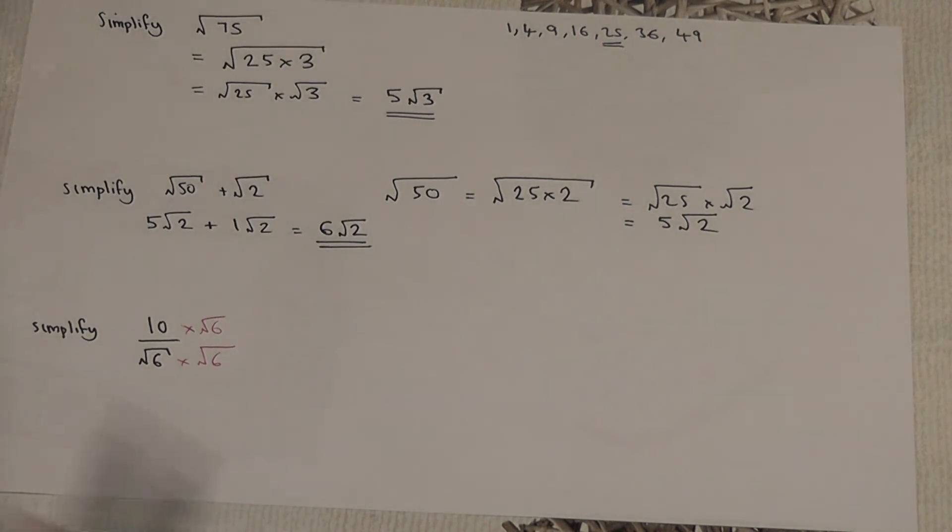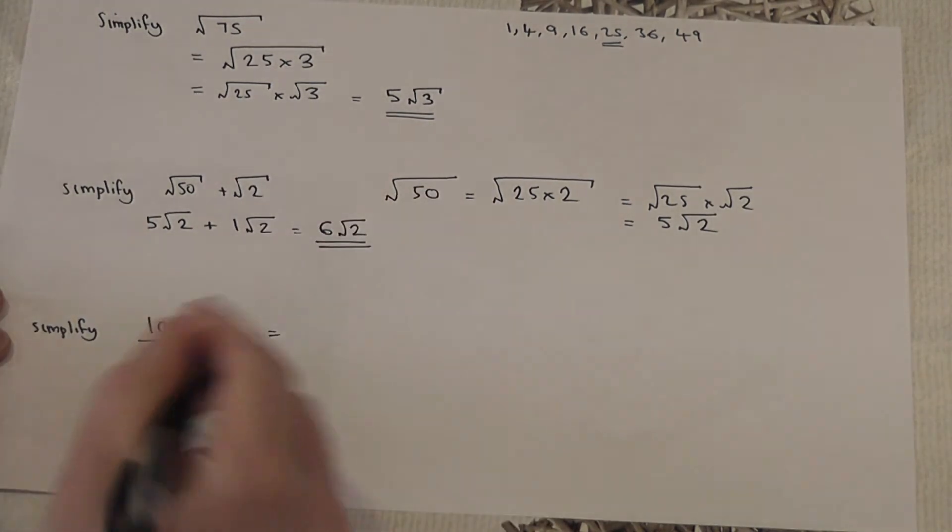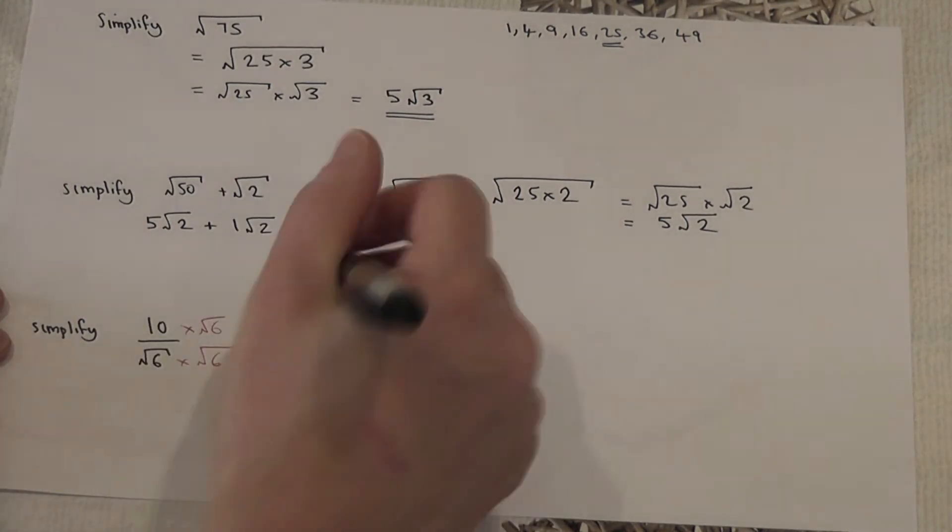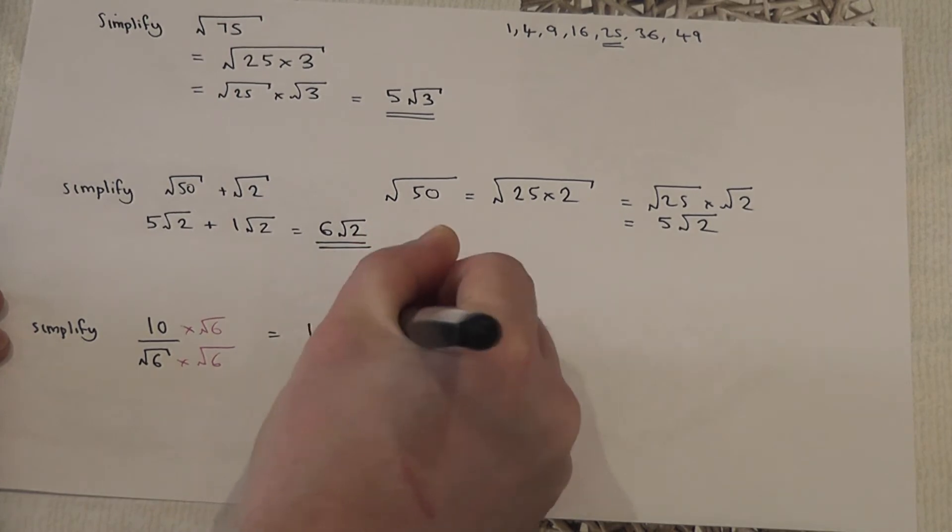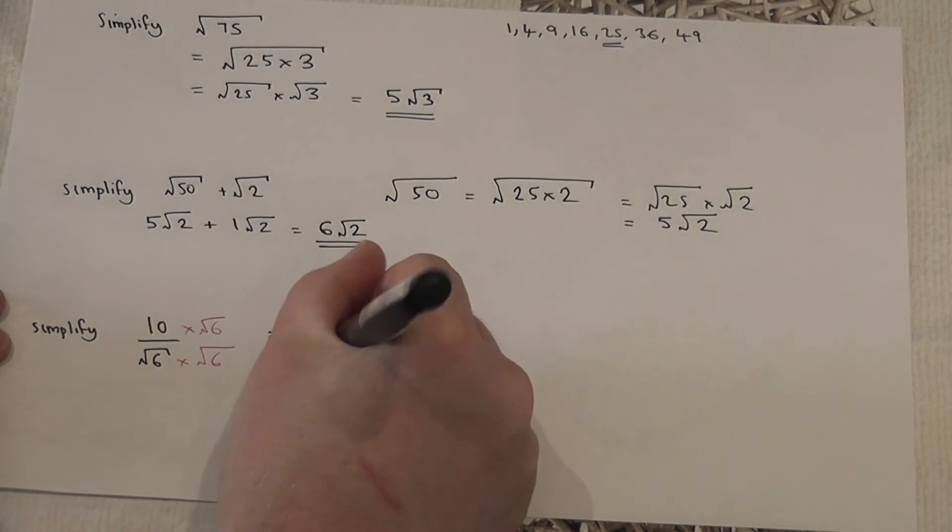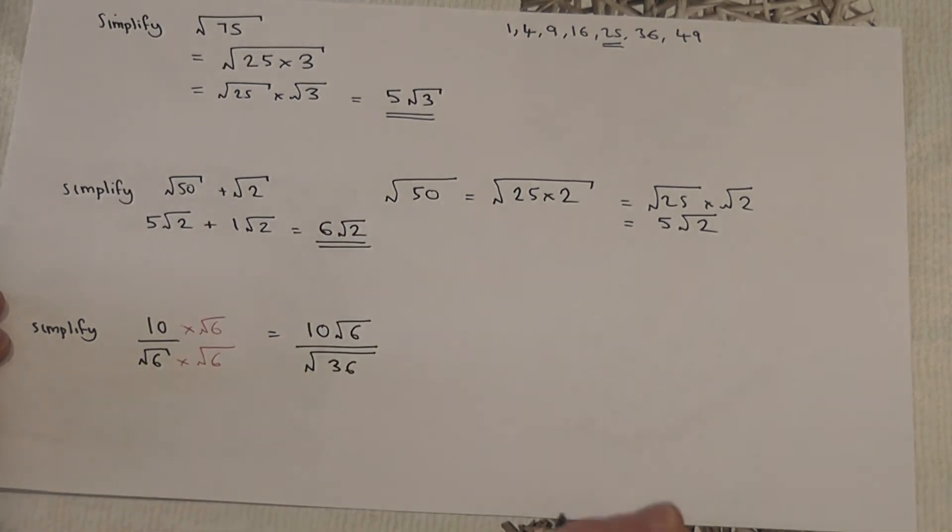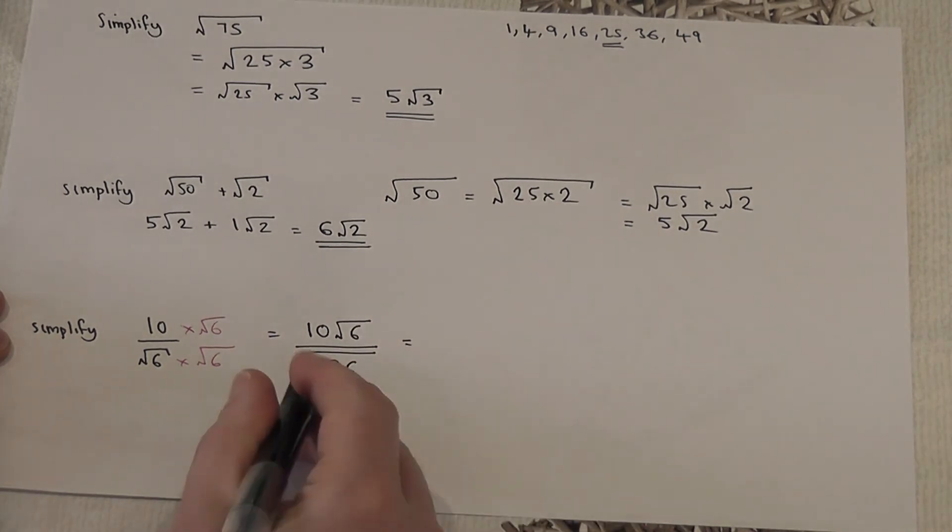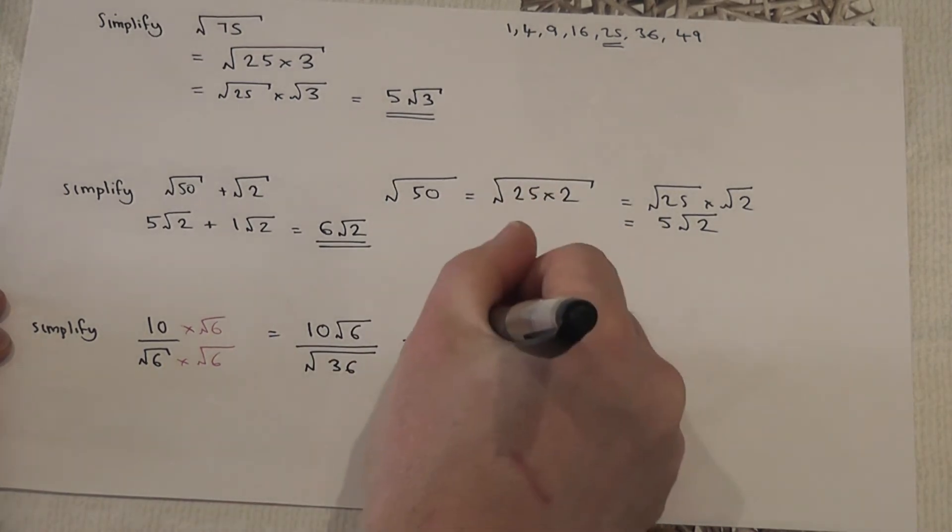So something clever happens. Now 10 root six is the top, and the bottom becomes root six times root six, which is square root of six times six, which is 36. And I can work out what root of 36 is—it's just six.